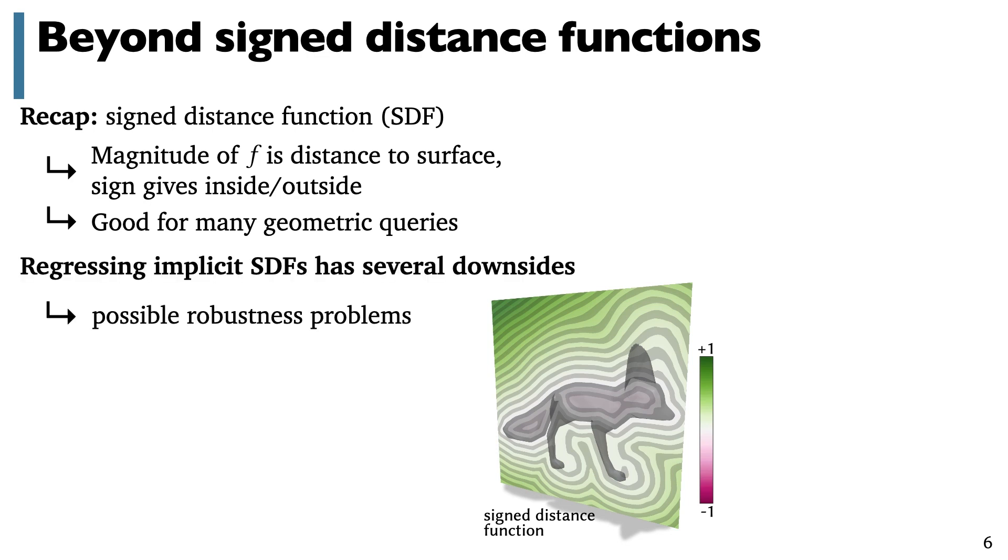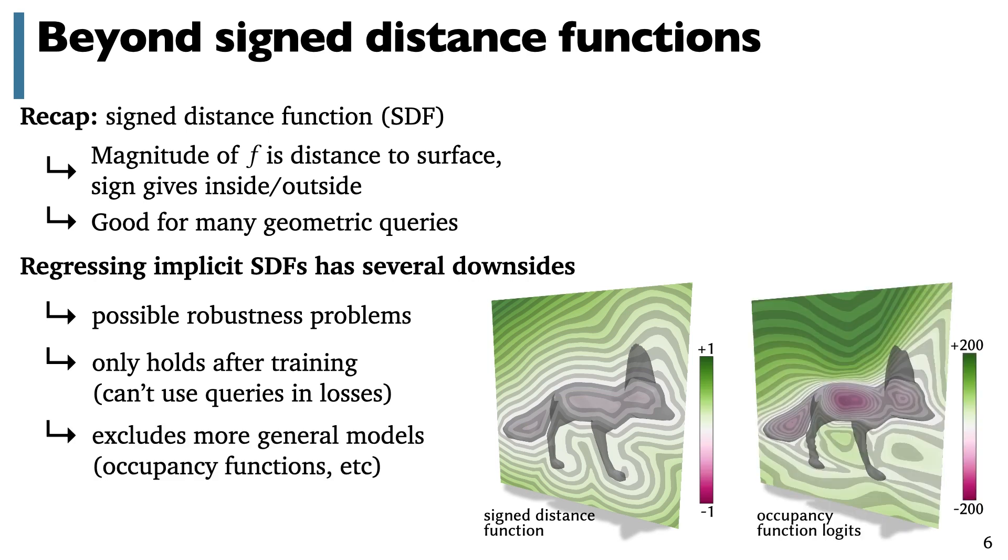First, neural networks only ever approximately model SDFs, leading to robustness problems. And more deeply, this property only holds at the end of training. So you can't use it in loss functions, which you would need to apply at the beginning of training. And also many computational tasks are just more naturally phrased on models for the surface other than sign distance functions.